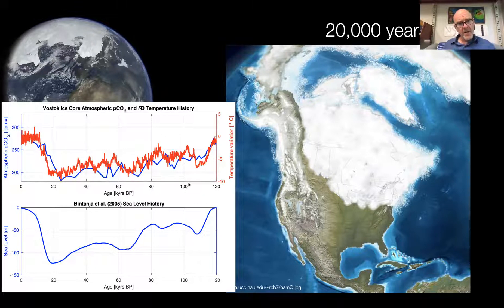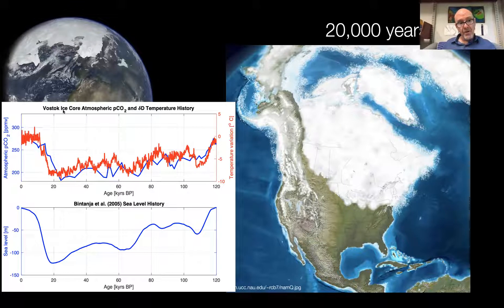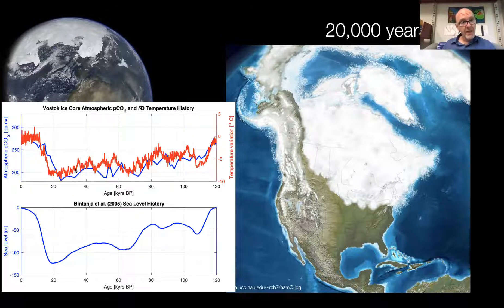20,000 years ago was the last glacial maximum. Sea level was about 120 meters lower because a large part of the ocean was stored in ice sheets on land, like the Laurentide ice sheet. In the upper panel you can see the temperature variation in red — it was about 8 or 10 degrees colder on a global average than today. Then it rapidly increases to about zero for the last 10,000 years during the deglaciation. The blue line shows the concentration of CO2 in the atmosphere. These data are from an ice core at Vostok in Antarctica — you drill the core, analyze gas dissolved in bubbles to estimate CO2, and the temperature comes from an isotope called deuterium.